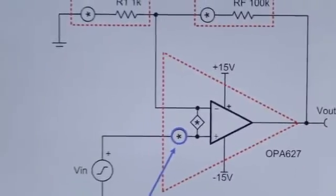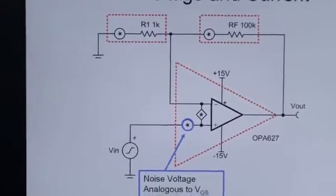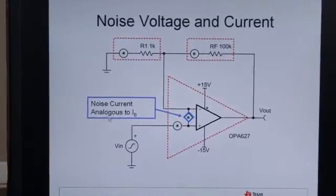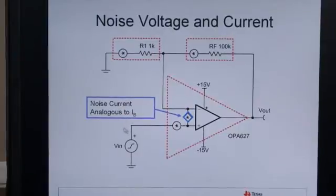The noise voltage source is actually analogous to an offset voltage. The noise current source is actually analogous to the bias current of the amplifier.